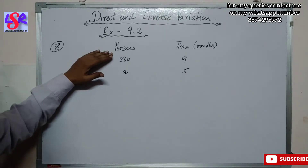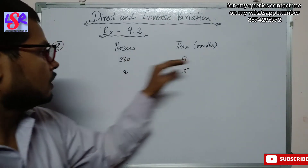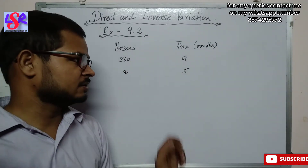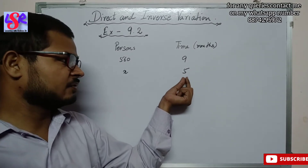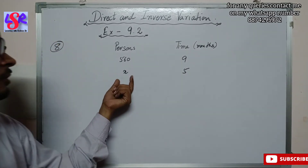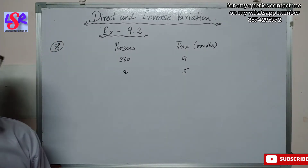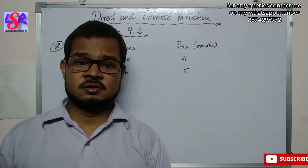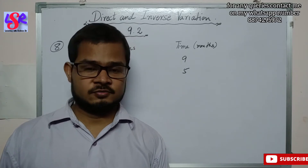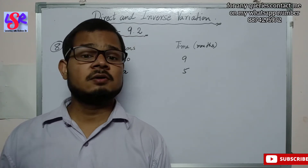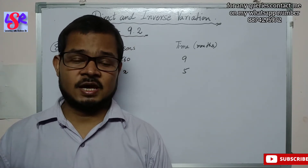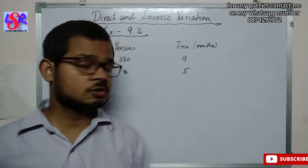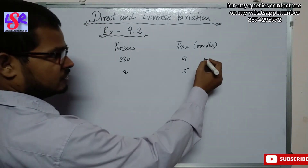Here in this question we have persons and the time in months. If the number of persons is 560, the work is completed in 9 months. Now if the work is to be completed in 5 months, how many more people are going to be employed? As we know, when the work is fixed, the number of persons and the time are in inverse variation — if we increase persons, we take less time, and if we have fewer persons, they take more time.